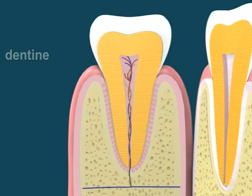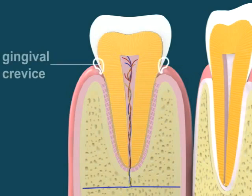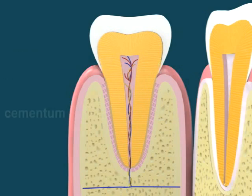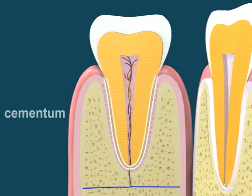The gingival crevice is the space between the free margin of the gingiva and the surface of a tooth, also known as the gingival sulcus. Cementum is a specialized calcified substance covering the root of a tooth.